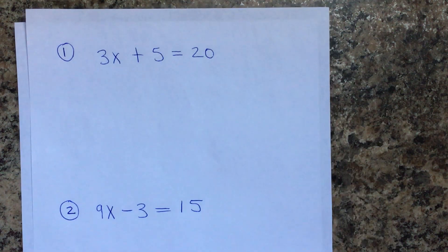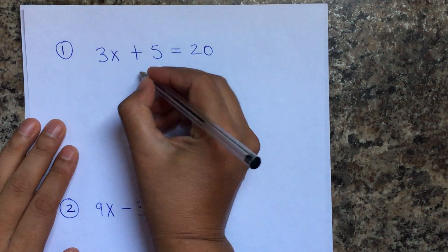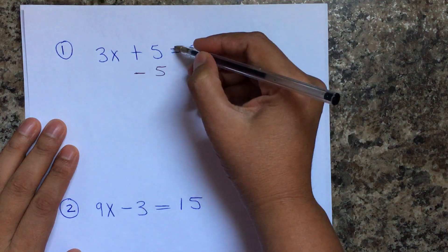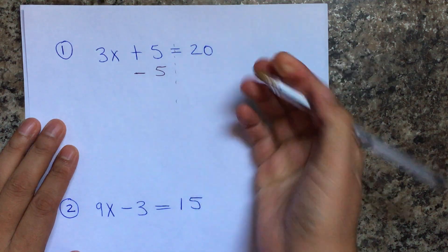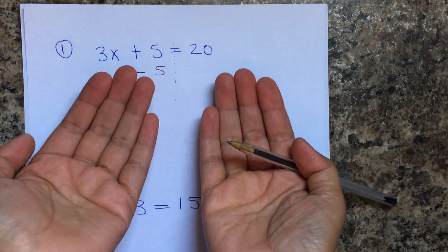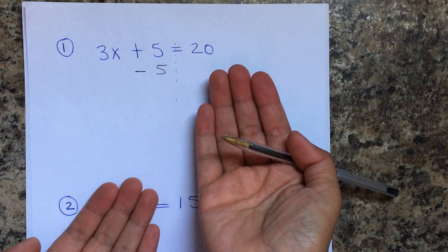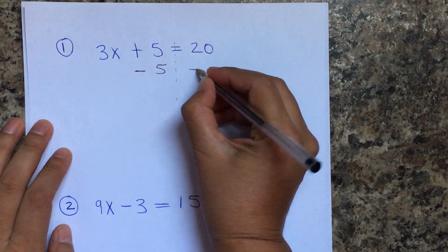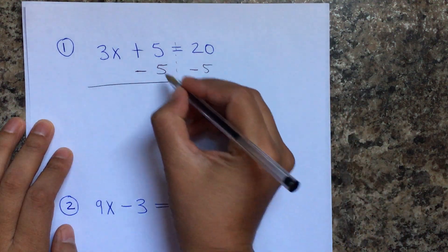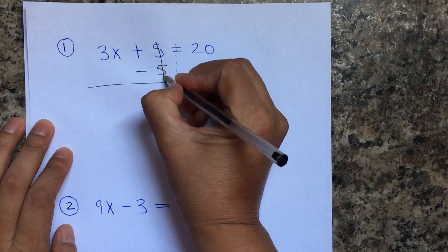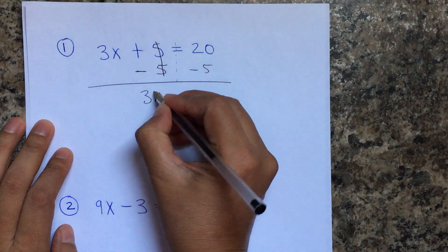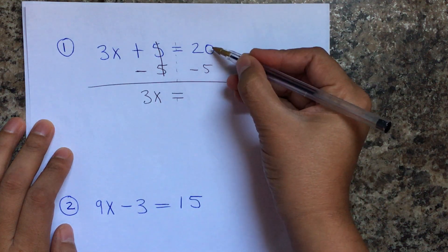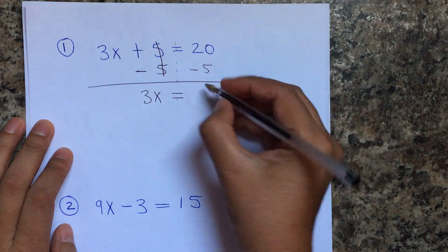If we're adding 5, the opposite of adding 5 is subtracting 5. This equal sign means both sides are equal, so if you subtract on one side you have to subtract on the other side as well. Five minus five is zero — that's why you cancel it — and you're left with 3x equals 20 minus 5.